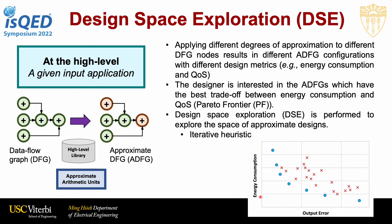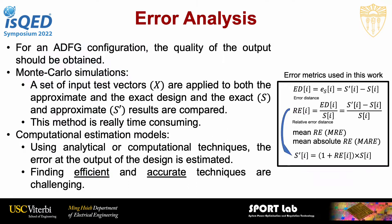The designer is only interested in ADFG configurations which result in the best trade-off between energy consumption and quality of service, which is called the Pareto frontier of the design space. To obtain those configurations, we need to search the design space using design space exploration heuristics, which are most of the time iterative. For an ADFG configuration, the quality of output can be obtained in two ways. One is Monte Carlo simulation, where input test vectors are applied to both the approximate and exact design and results are compared — however, this method is really time consuming. The other method is the use of computational estimation models, using analytical or computational techniques to estimate the error at the output. The challenge is finding efficient and accurate techniques for this method to be helpful.